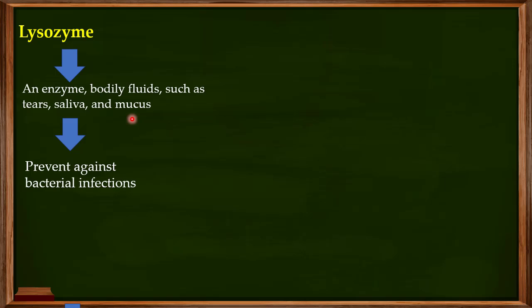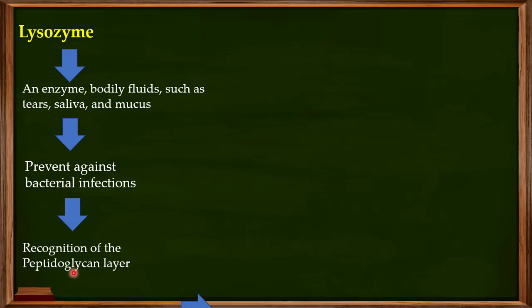An important thing to keep in mind about lysozyme is that it will only recognize bacteria which have a peptidoglycan layer. Bacteria that do not have this peptidoglycan layer will not be affected by lysozyme. Two of the most famous examples of bacteria that do contain a peptidoglycan layer are gram-positive and gram-negative bacteria. That means lysozyme is very much active against these two classes of bacteria.